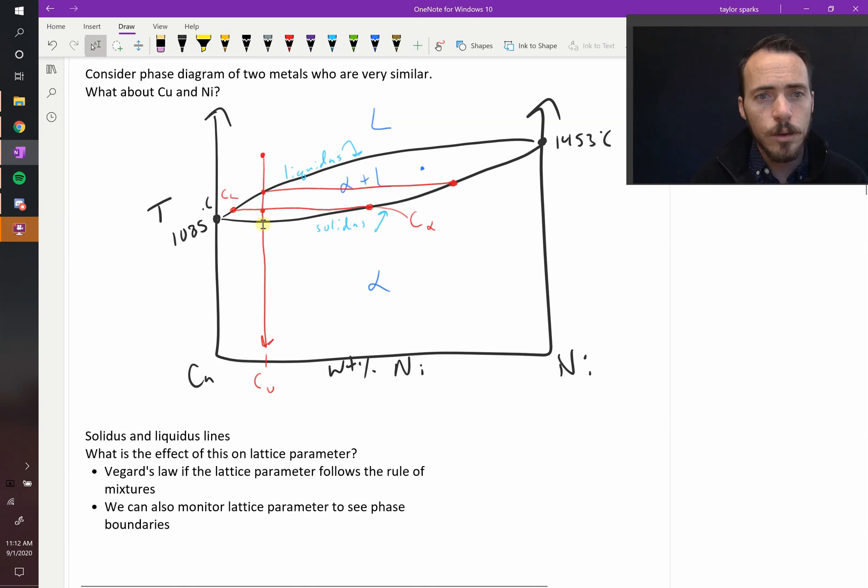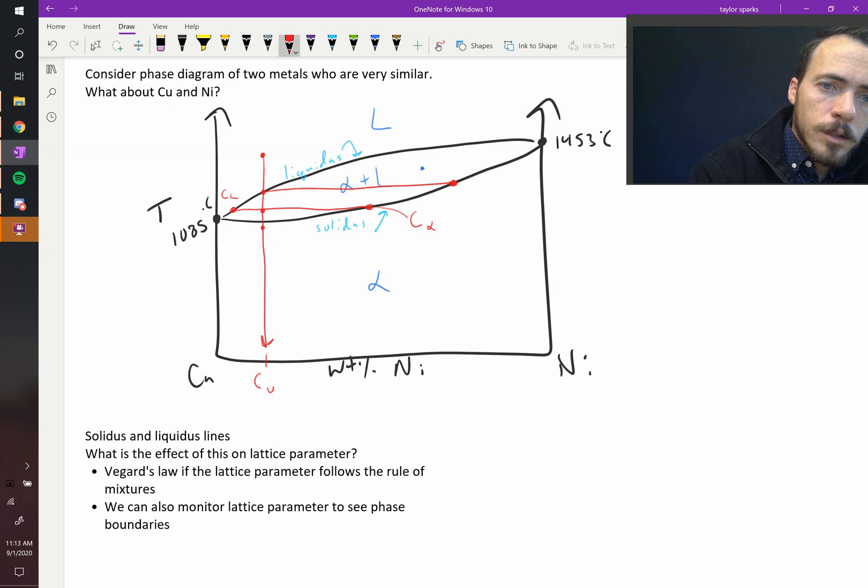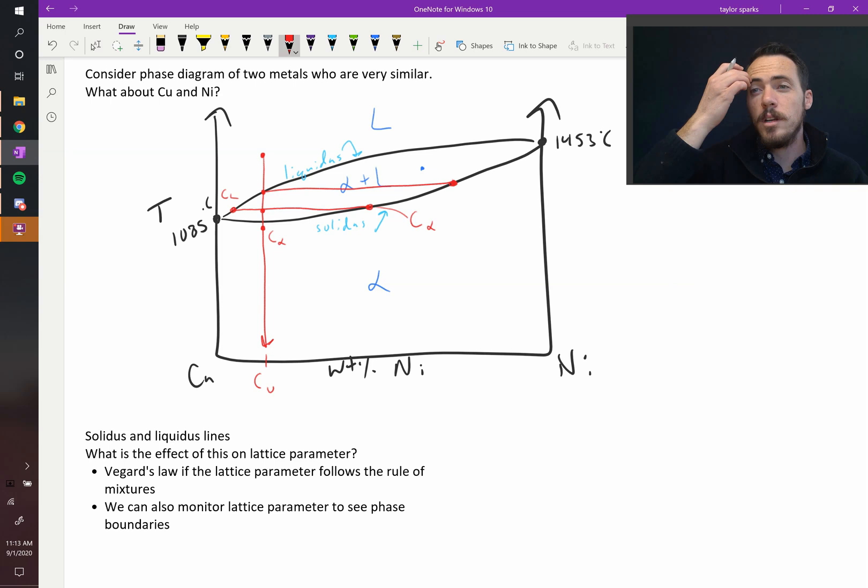So as you continue cooling this down, they're going to change until you are now just below the solidus line, and you're in a solid again. Now everything is at one composition again, and it's going to be the same as the composition that you started with. So that is the solidus and liquidus lines on these diagrams.